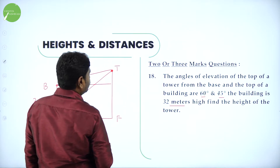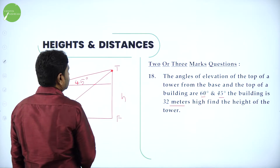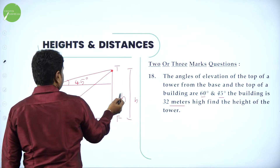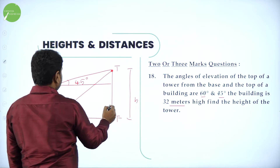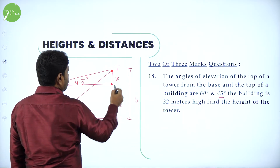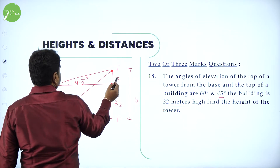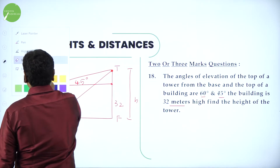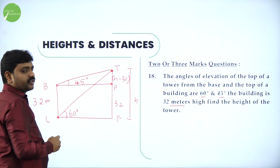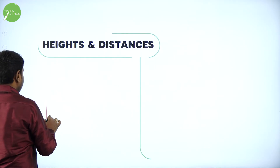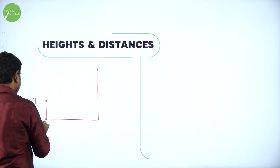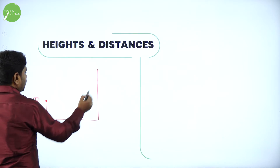Let H be the height of the tower TF. When observing from the top of the building, the relevant vertical distance to the top of the tower is H minus 32. Let us call the top of the building point P. The horizontal distance between the building and tower is called x, and FP equals BL equals 32 meters.